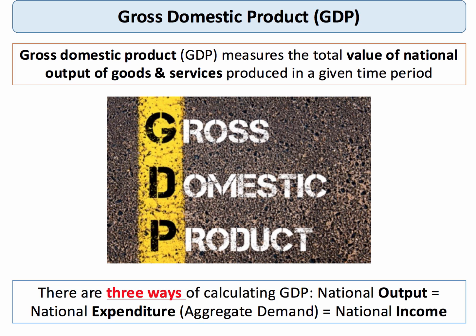The three ways of calculating GDP: either the value added from different sectors of the economy such as manufacturing and services, or aggregate demand — C plus I plus G plus X minus M — or we can sum together all the factor incomes that are generated in the production and supply of goods and services.